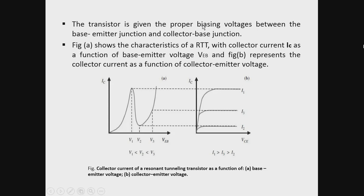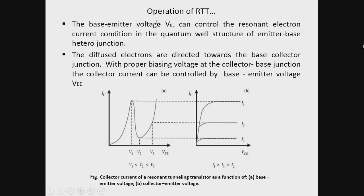The transistor is given proper biasing voltages between the base-emitter junction and collector-base junction. Figure A shows the typical characteristic of a resonant tunneling transistor, where the collector current varies in accordance with the base-emitter voltage. Figure B shows the collector current variation with variations of the collector-emitter voltage. The base-emitter voltage VBE controls the resonant electron current condition in the quantum structure of the emitter-base heterojunction, and the diffused electrons are directed towards the base-collector junction.